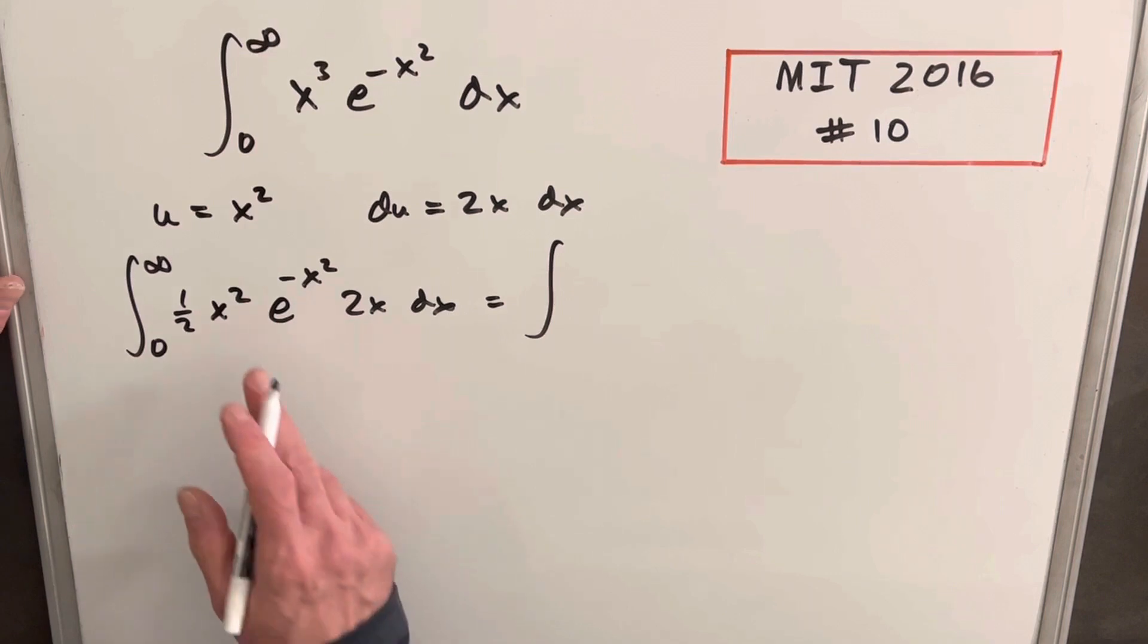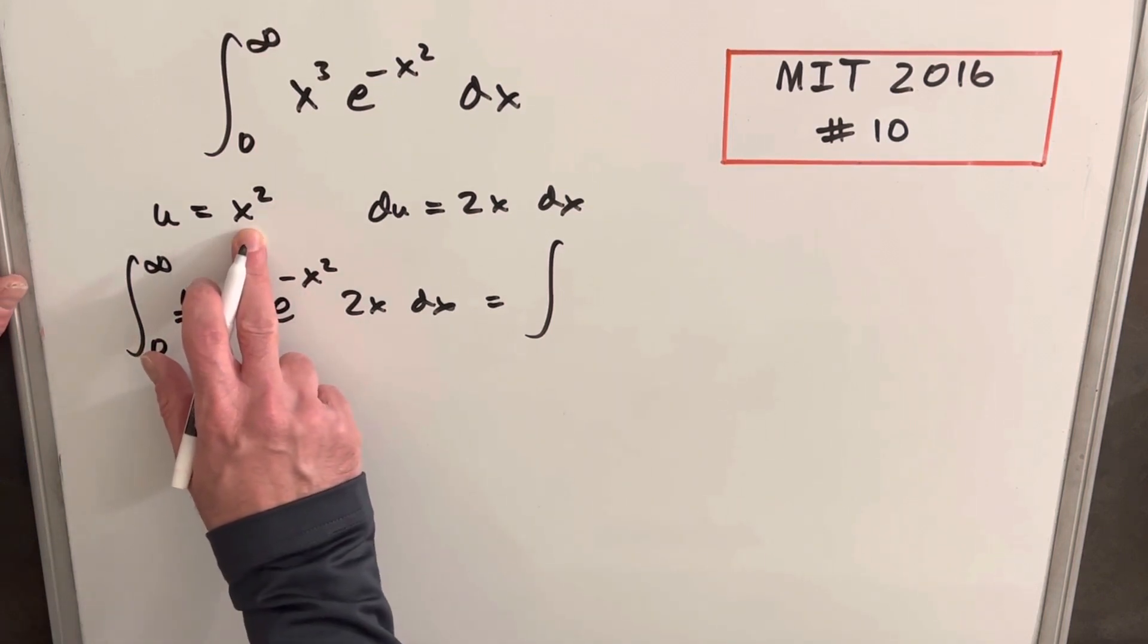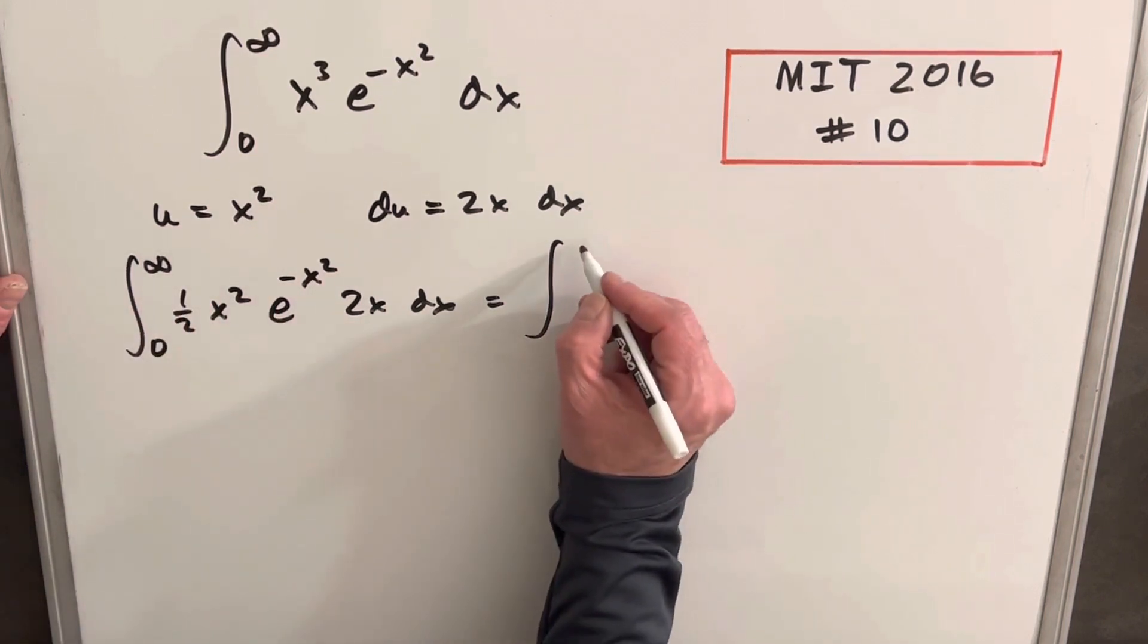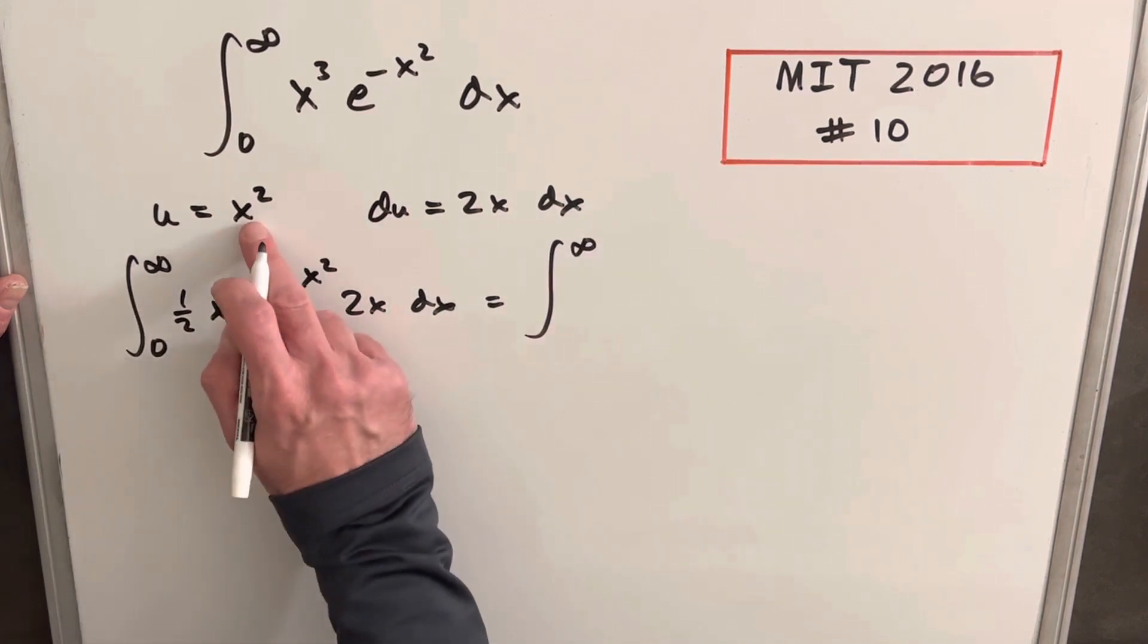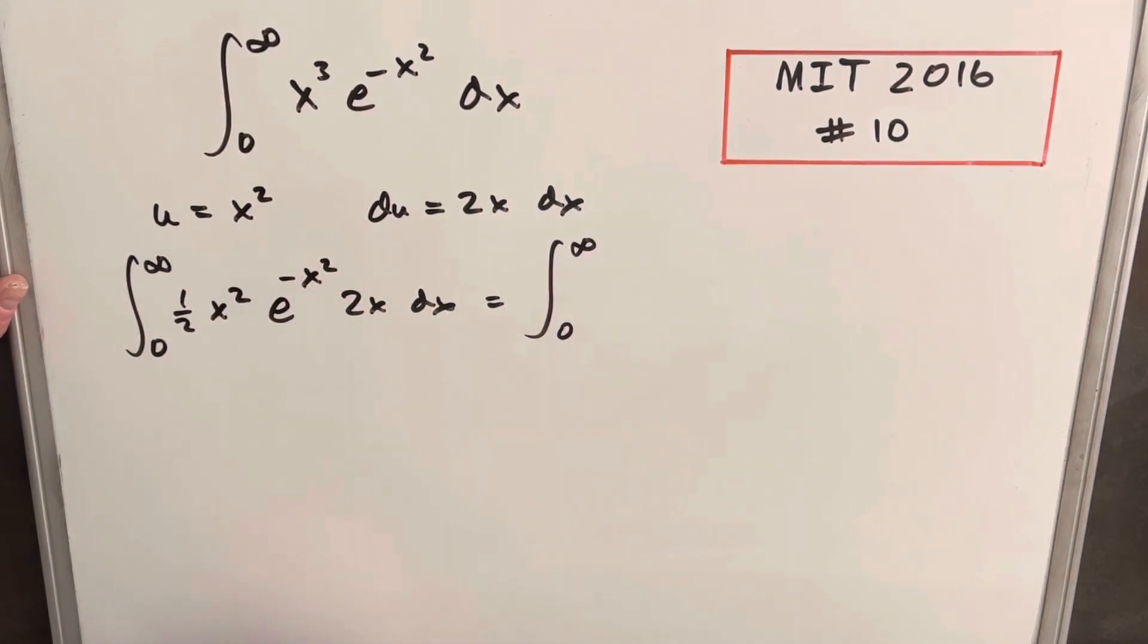And the nice benefit of using x squared here instead of minus x squared is our bounds won't change. So putting in infinity, we get infinity. Putting in 0, we still have a 0.